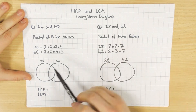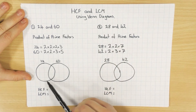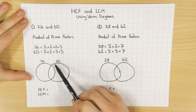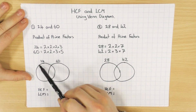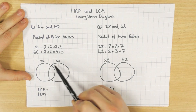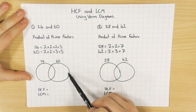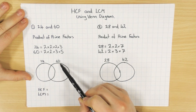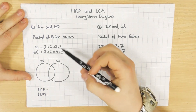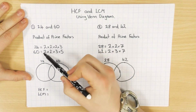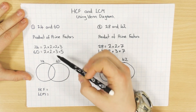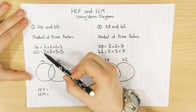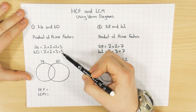Now we can use a Venn diagram. Just to refresh your memories, a Venn diagram is just two circles that overlap. This circle here I've got for 24, this one here I've got for 60. You have a look at the product of prime factors for each number, and the reason I put them in order is because it makes it really easy to see which ones are the same.